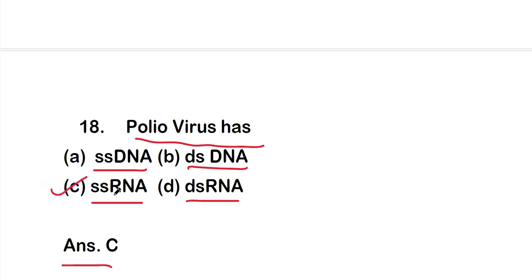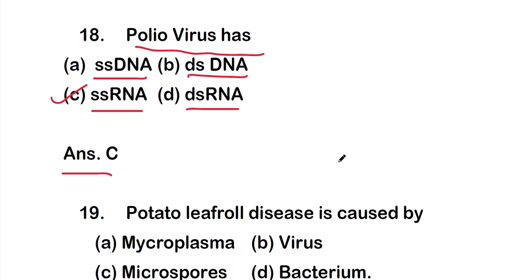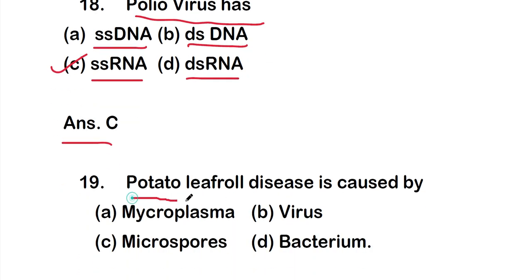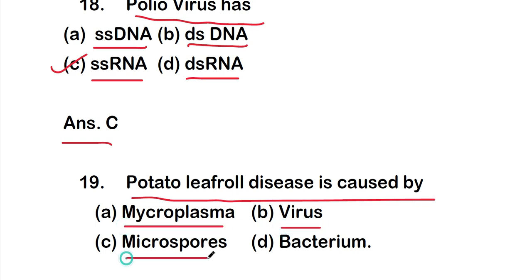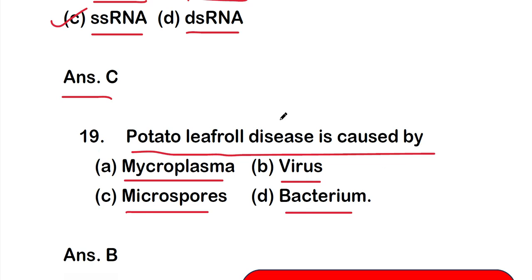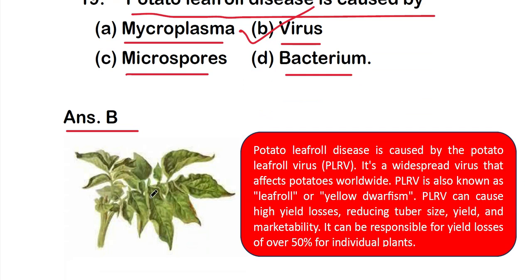Question 19: potato leaf roll disease is caused by — option A: mycoplasma, option B: virus, option C: microspores, or option D: bacterium. The right answer is option B, virus. Potato leaf roll disease is caused by the Potato Leaf Roll Virus (PLRV), also known as leaf roll or yellow dropism. It is a widespread virus affecting potatoes worldwide.